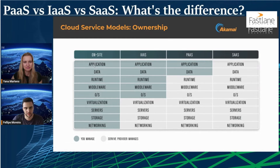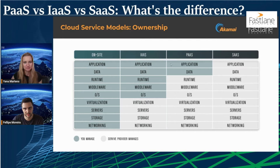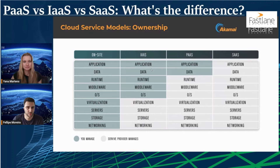The ownership shifts from you owning everything to owning essentially just your data when using a SaaS application. This maps directly to the car analogy — PaaS compared to a taxi means the platform is running and doing what it's supposed to, like a taxi driver taking you to your destination. If you need more customization, you move closer to on-premises or take on more ownership.